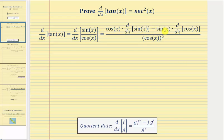Minus the numerator, or minus sine x, times the derivative of the denominator, which is the derivative of cosine x, all divided by the denominator squared, or in this case cosine x squared.